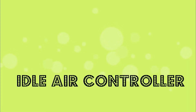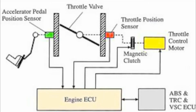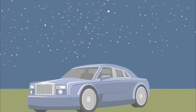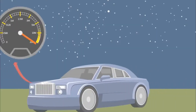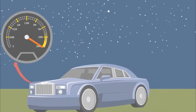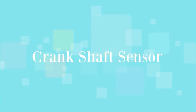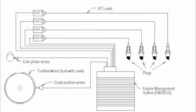Idle air controller works to keep the RPM of the engine steady. It is an actuator, not a sensor. It increases the RPM of the car until the coolant temperature sensor indicates high engine temperature. Crankshaft sensor monitors the position and rotational speed of the crankshaft, and this information is important for the ECM to control ignition system timing.